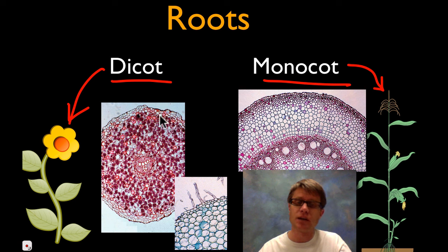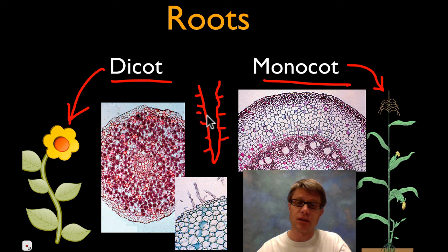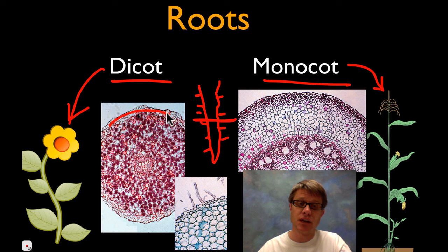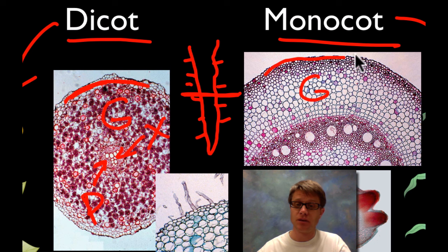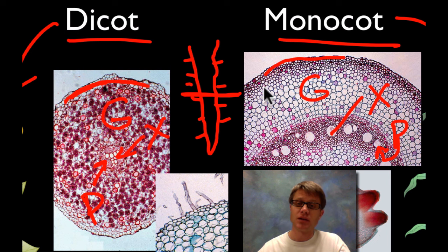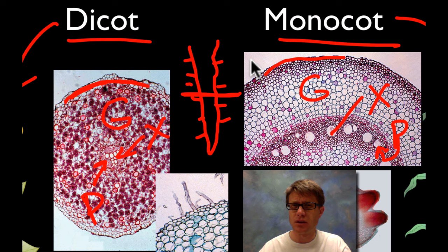Starting in the roots, we're looking at a cross section — imagine cutting right across the root. There are three types of tissues: epidermis on the outside, ground tissue in the middle, and vascular tissue on the inside. That vascular tissue is made up of xylem and phloem. In the roots, the vascular tissue — responsible for movement of water and nutrients — is centered in the middle of the root. So the water has to travel from the outside to the center.